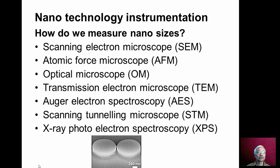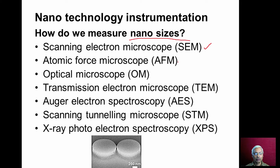How do we measure nano sizes? Different instrumentations are currently available: scanning electron microscopy (SEM), atomic force microscopy (AFM), optical microscopes with very high resolution, transmission electron microscope (TEM), Auger electron spectroscopy, scanning tunneling microscope (STM), and X-ray photoelectron spectroscopy. These devices can be used for measurement of nano sizes of workpieces.